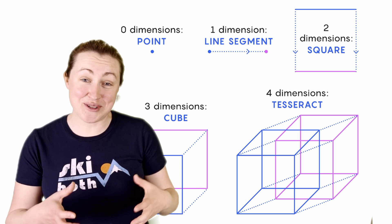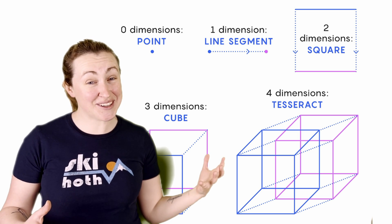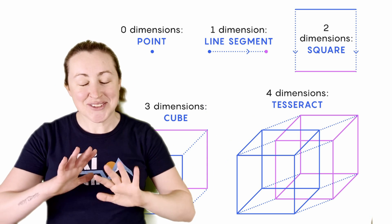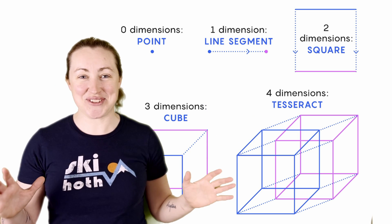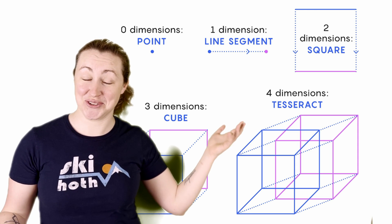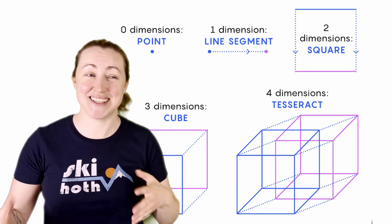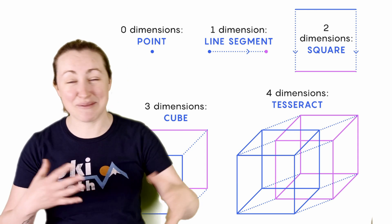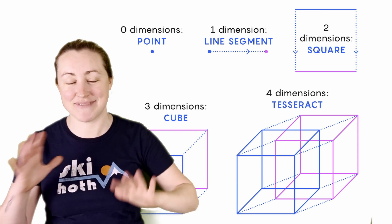Connecting lower dimensions can give you a higher dimensional object. Don't get ahead of yourself thinking you just solved higher dimensional travel, because the angle you do it at matters, and time comes into play — and that's when things get a bit weird.